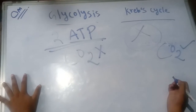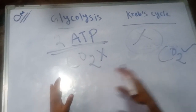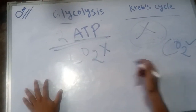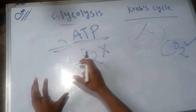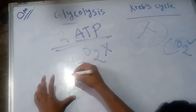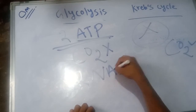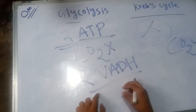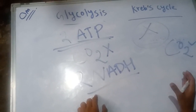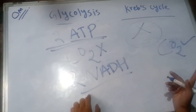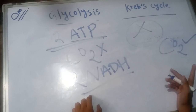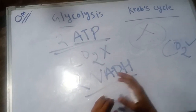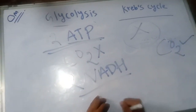The last difference: glycolysis yields two NADH per glucose molecule. But in the case of Krebs cycle, it yields six NADH molecules and two FADH2 molecules from two acetyl coenzyme A. So basically this is the basic difference between glycolysis and Krebs cycle. Thank you.